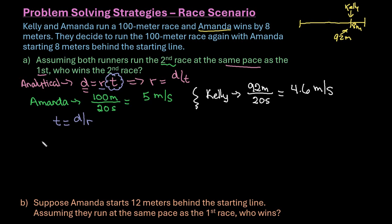For this one, our time for Amanda, let's talk about Amanda first. We know that she's going to be running 100 plus she started 8 back behind. So she's going to run a total of 108 meters at a rate of 5 meters per second.